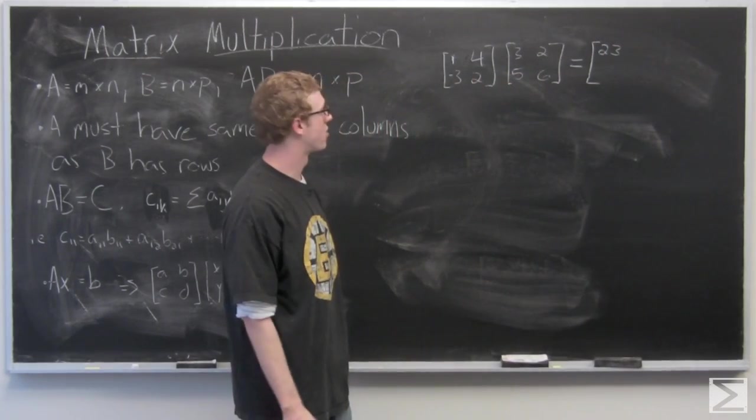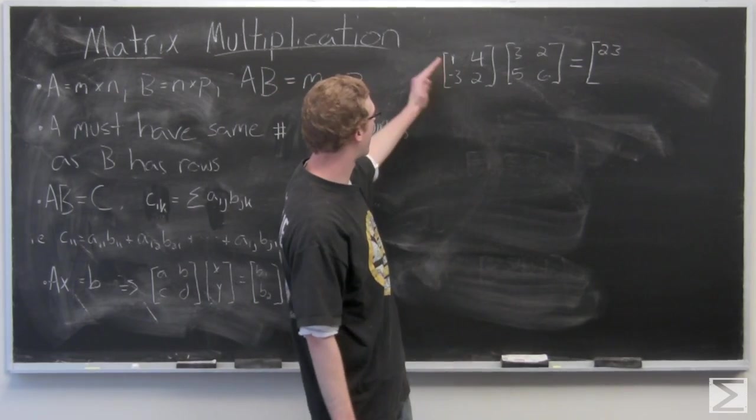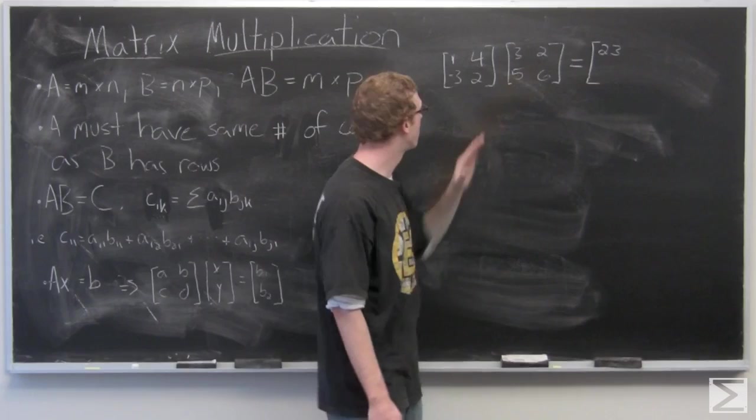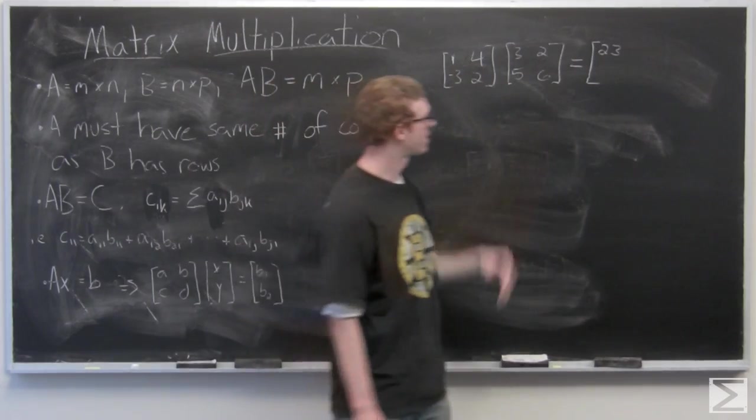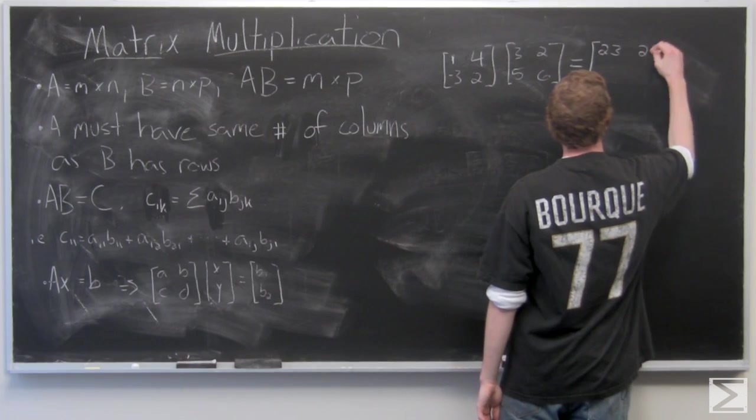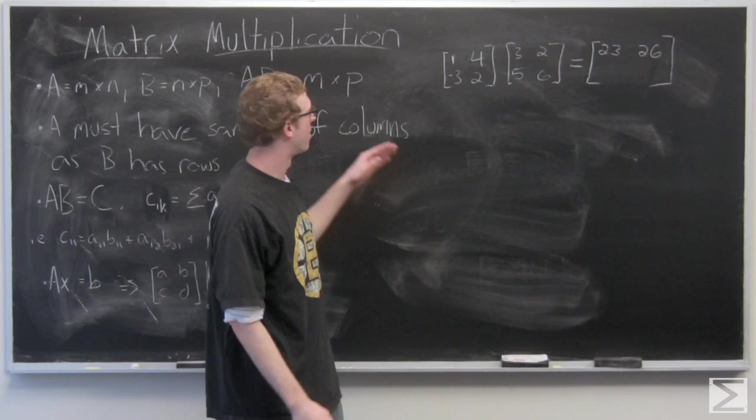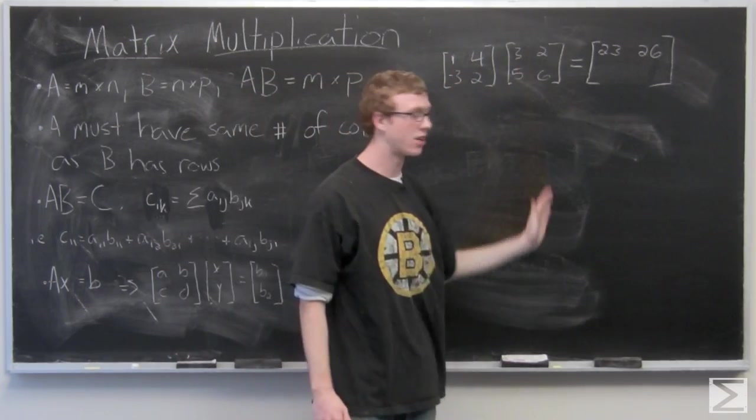And that's our entry in the first position. Now we want our entry in the second position so we're going to multiply 1 times 2 and 4 times 6. And notice we're multiplying the first row by the second column.